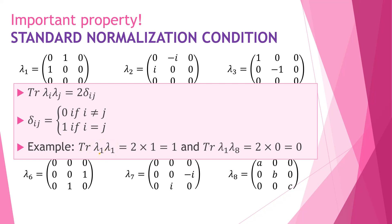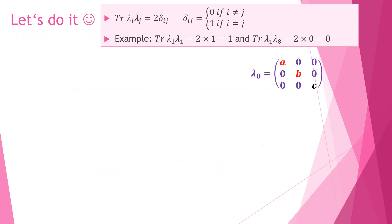For a different example, if we take the trace of the product of lambda 1 and lambda 8, we see that i equals 1 and j equals 8, so i is not equal to j, and therefore the trace must be zero. This is the property we will use to find the values of A, B, and C. So let's do it. We multiply lambda 1 by lambda 8 — the diagonal elements are all zeros so the trace is zero, which doesn't help much. The same happens for lambda 2 times lambda 8.